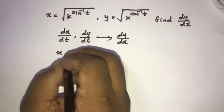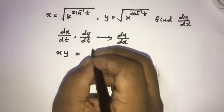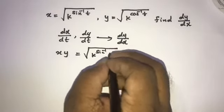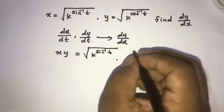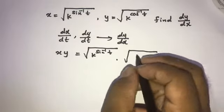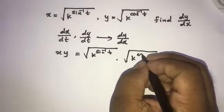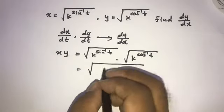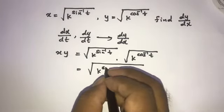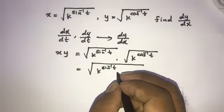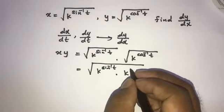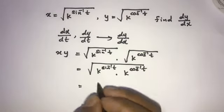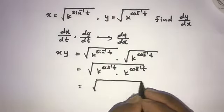If we take x times y, we can write square root of k to the inverse sine of t times square root of k to the inverse cosine of t, then k to the inverse sine of t times k to the inverse cosine of t, and we can sum the exponents.